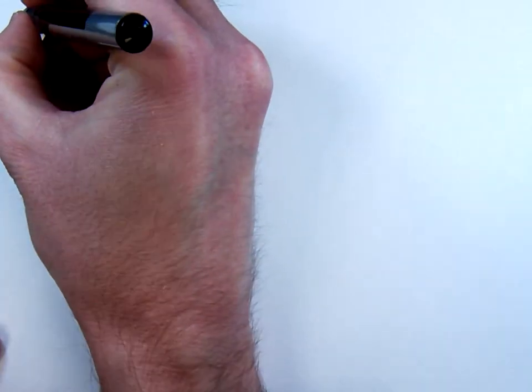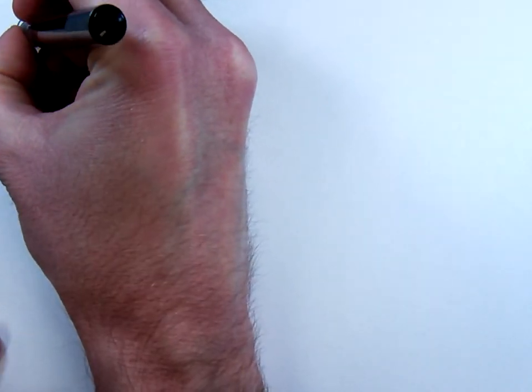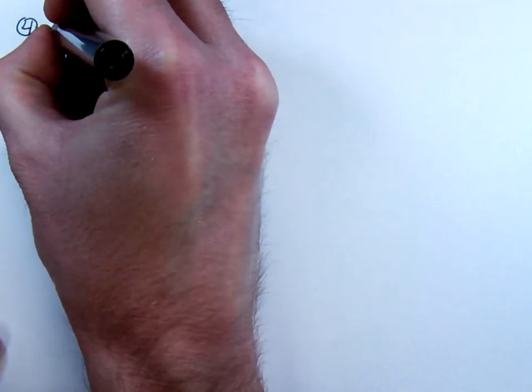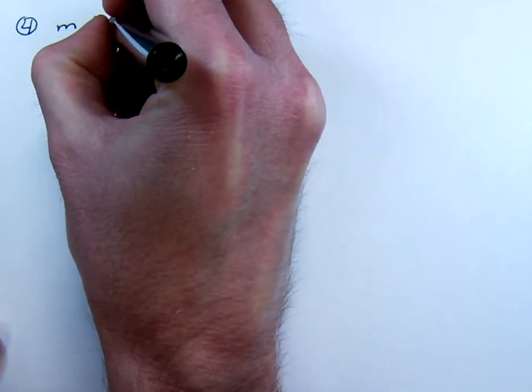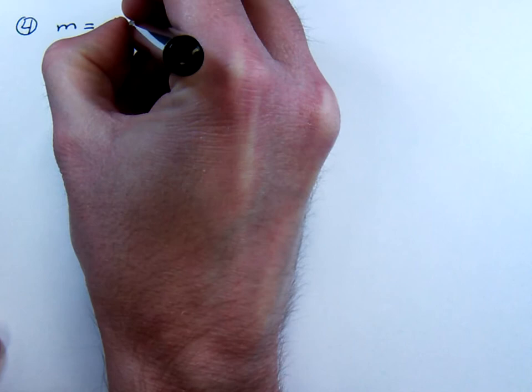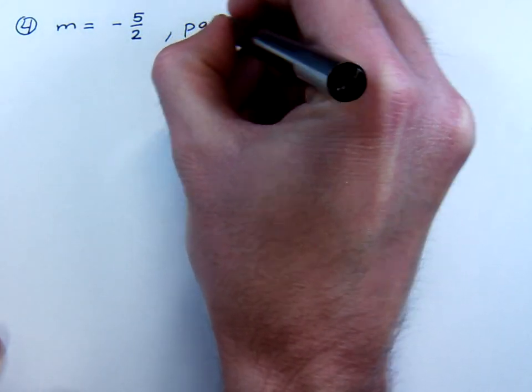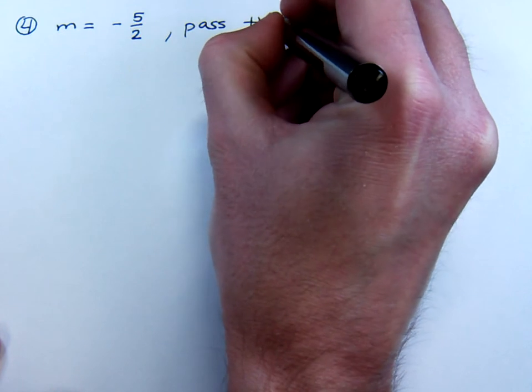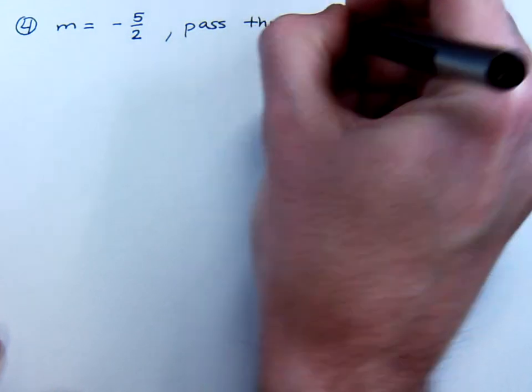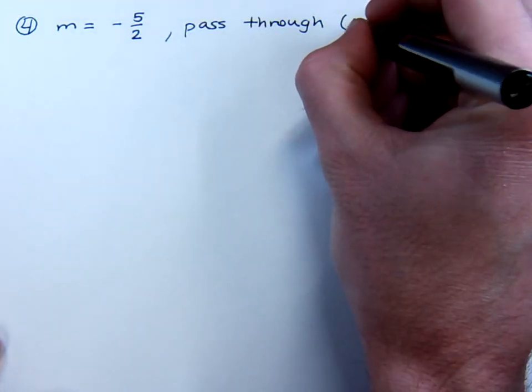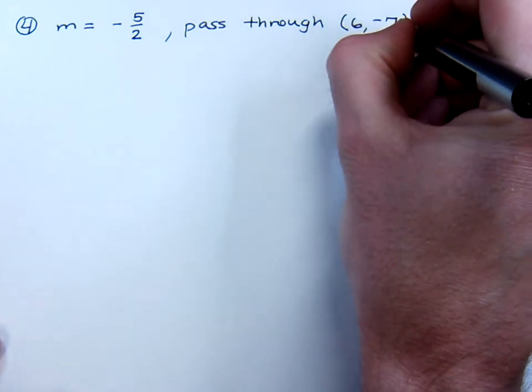All right, so let's look at another example of writing an equation for a line. And this time, the slope is equal to negative 5 halves. And I want to pass through the point 6, negative 7.